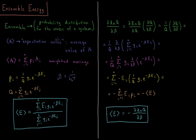So if we want to calculate the expectation value, or the average value, of a given property A in statistical mechanics, that's represented by these angle brackets on the outside of A. The average value of A is equal to a weighted average for all of those individual states — a sum over all the states or energy levels of the system, of the probability of that level times the value of the property in that level or state.